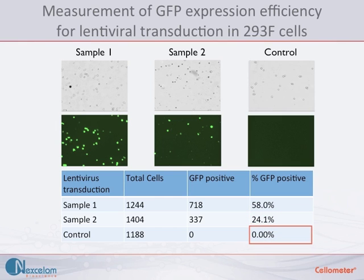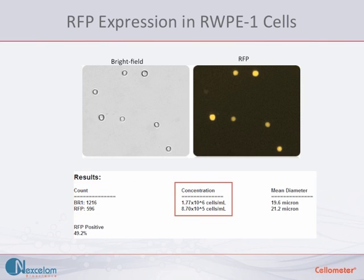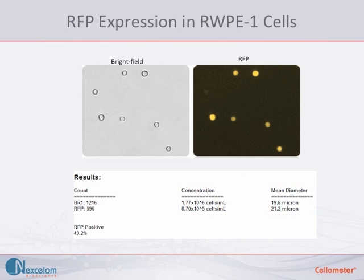Similar to GFP expression, we can also detect RFP expression. Shown here is RFP expression in RWP1 cells. Brightfield and fluorescent images were acquired, and the data output table shows the number of cells counted, the concentration of brightfield cells and the RFP positive cells, their mean diameter, and the percent of RFP positive cells.